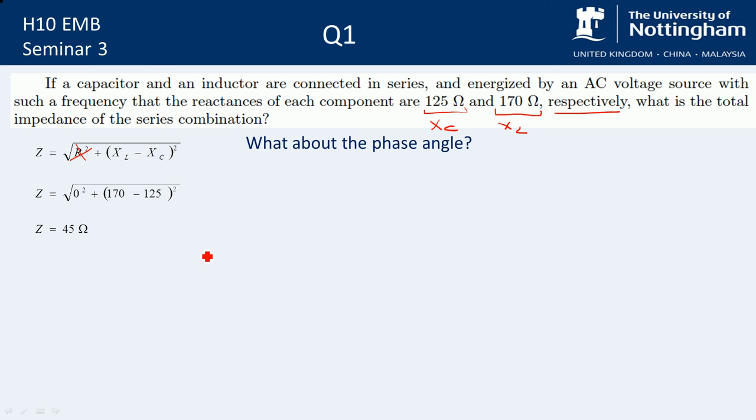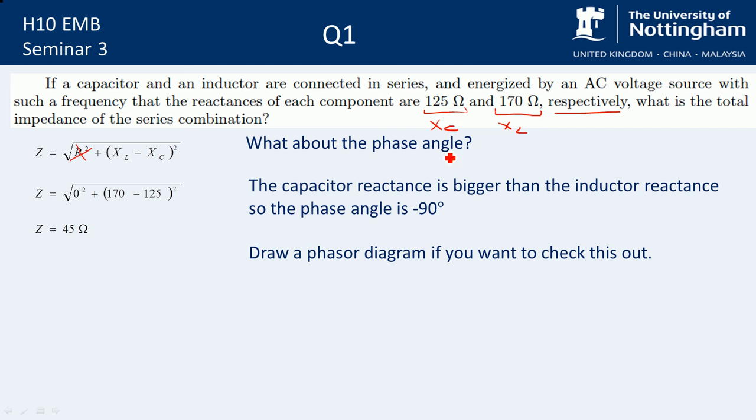What about the phase angle? Well, basically we can look at this and see that—that's the wrong way around, that should be plus 90, but anyway, go with me here. Because the reactance of the inductor—sorry, this is what happens when you work it out first. This is why you should always go through and double-check your exam answers. Don't make silly mistakes. Because the inductor reactance is bigger than the capacitor reactance, the phase angle is plus 90 degrees.